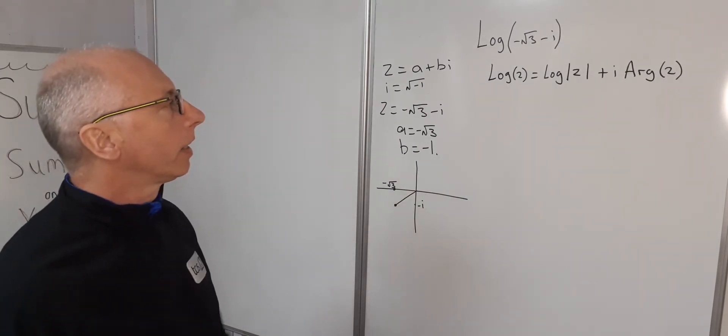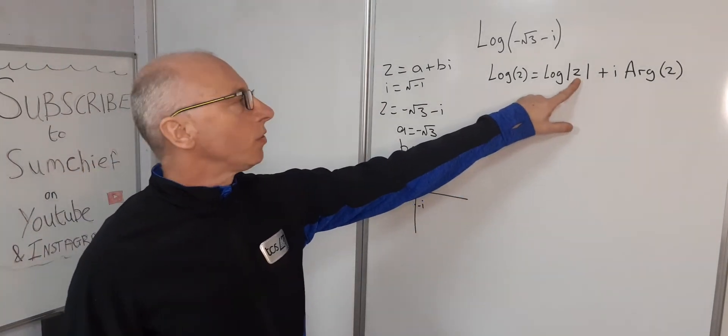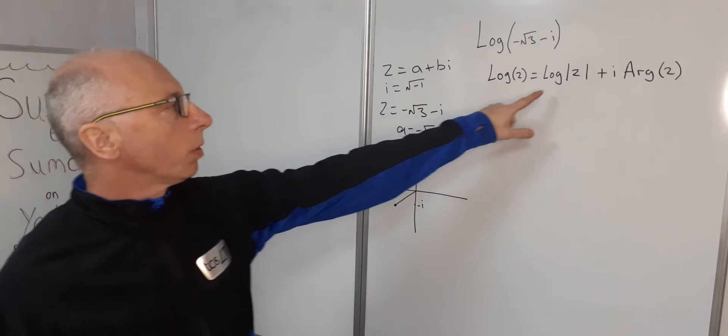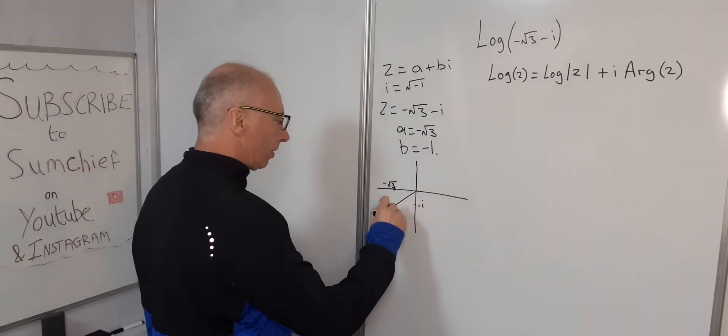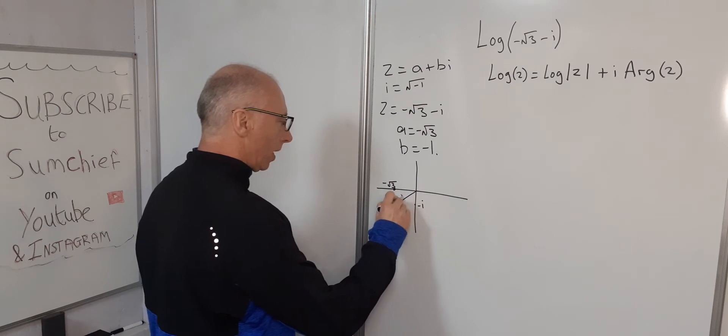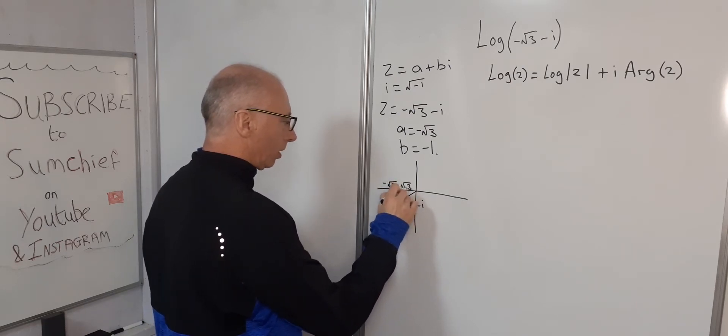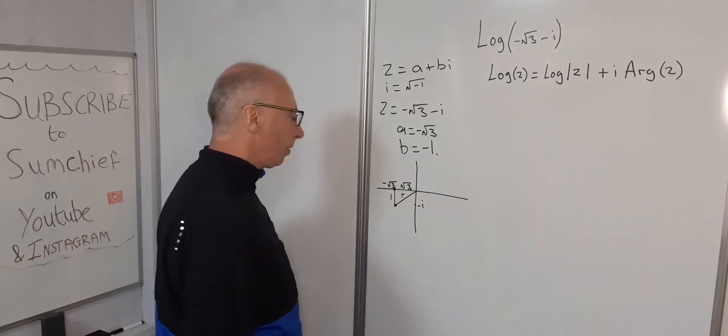Okay, so what's the argument of z? That's the first thing we can work out here. So what's the argument of this? So what we need to work out is the length of this line here. So we can use Pythagoras for that. So we've got root 3 for this side and this side would be 1.